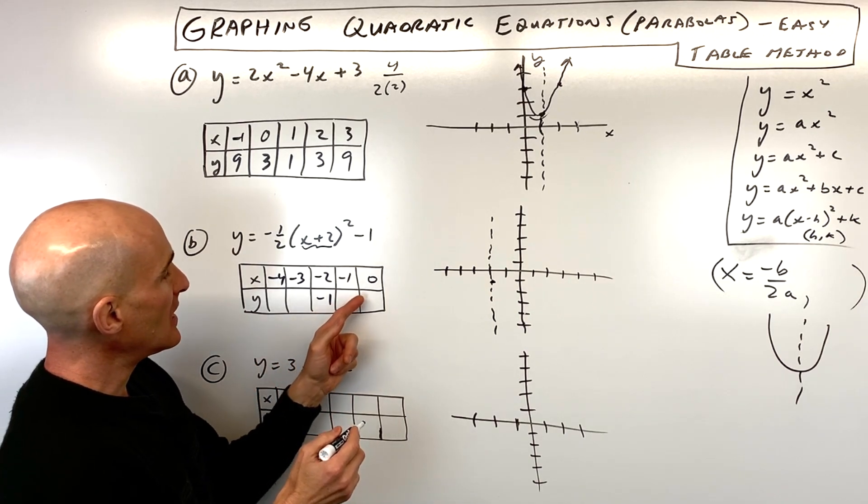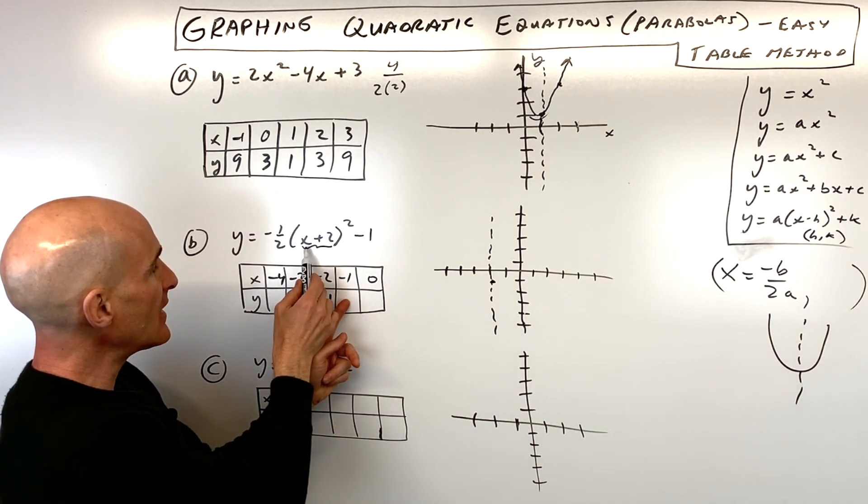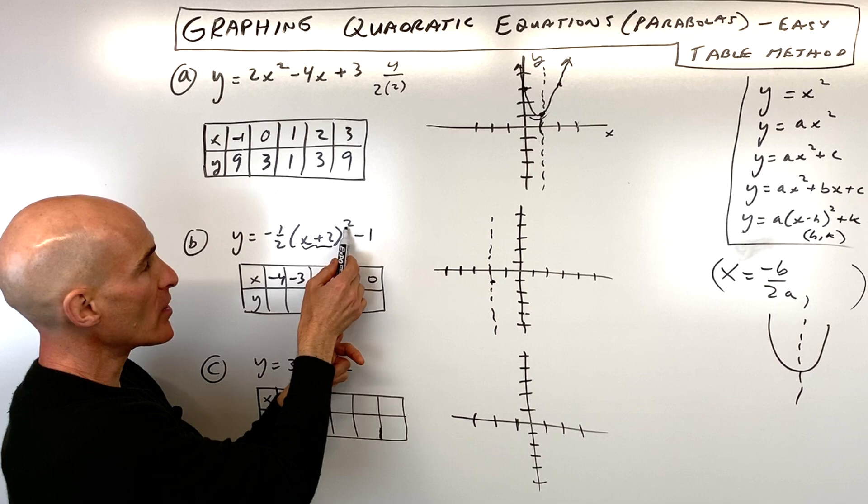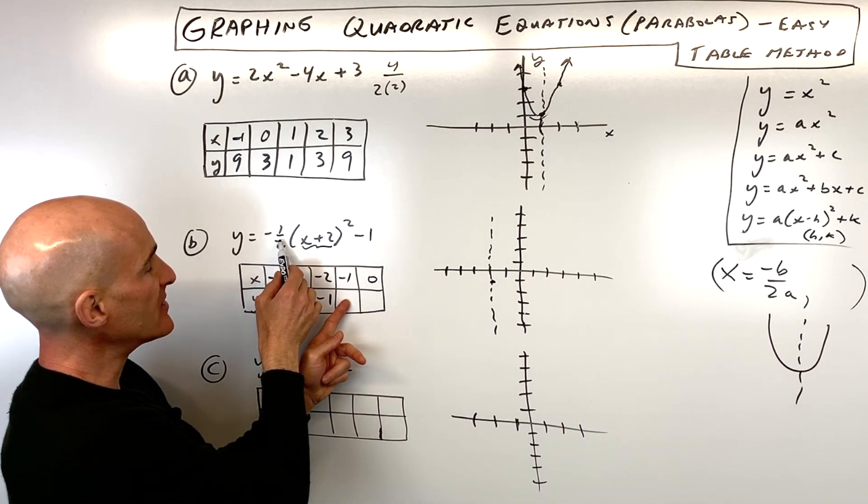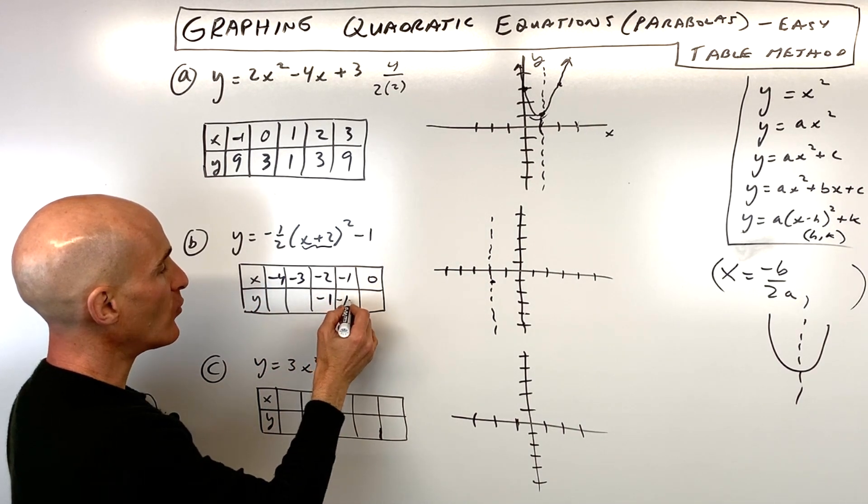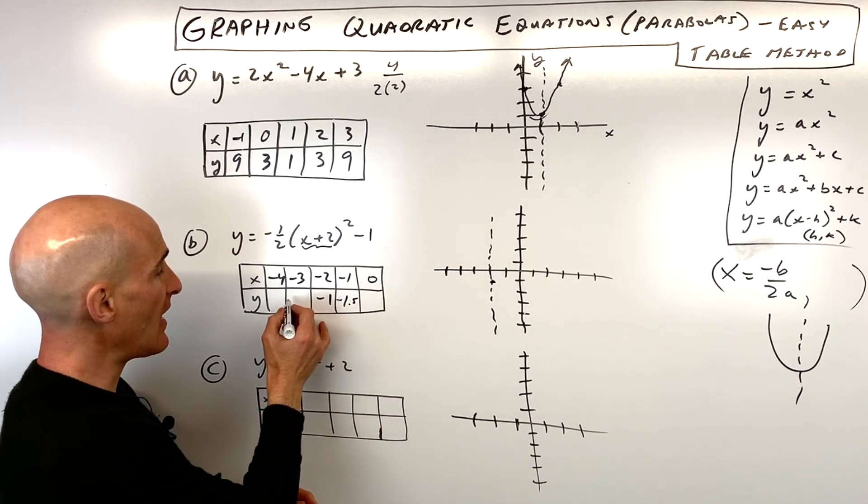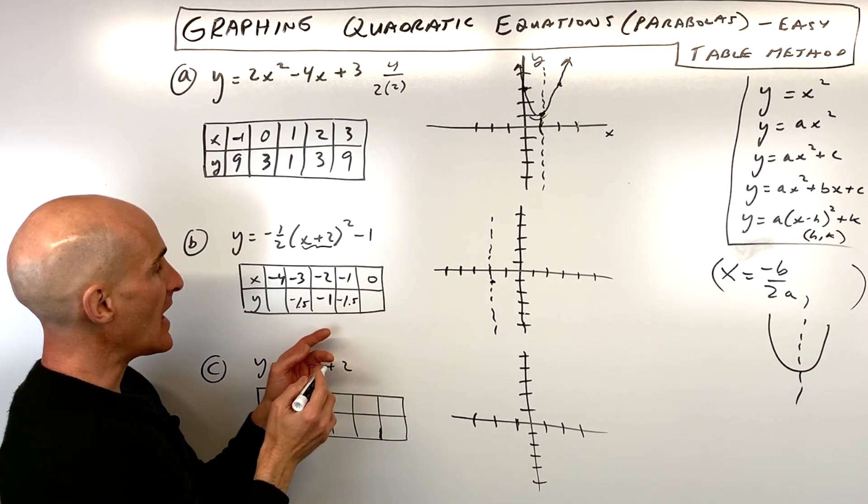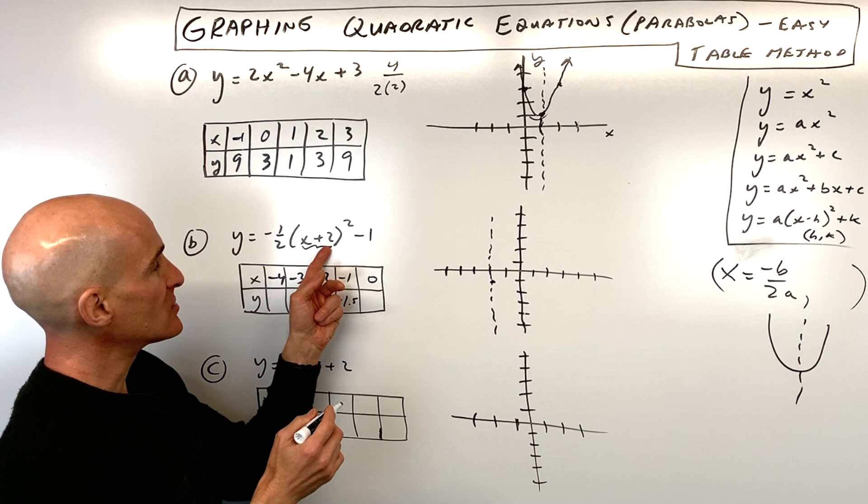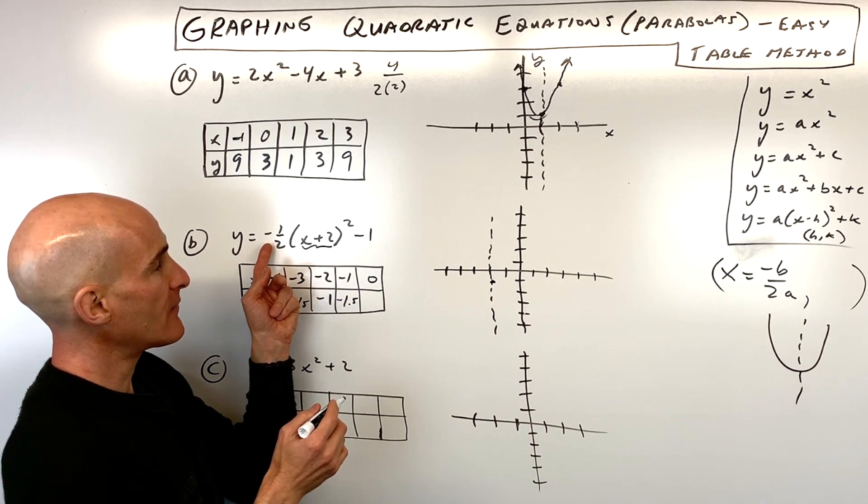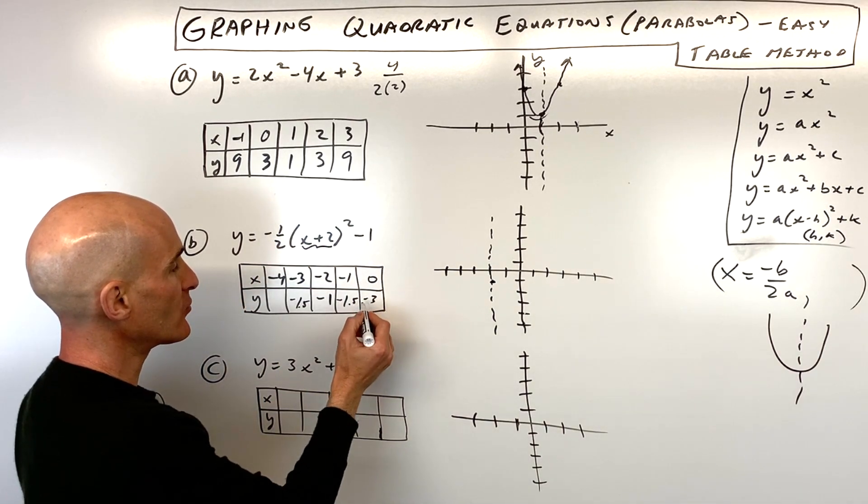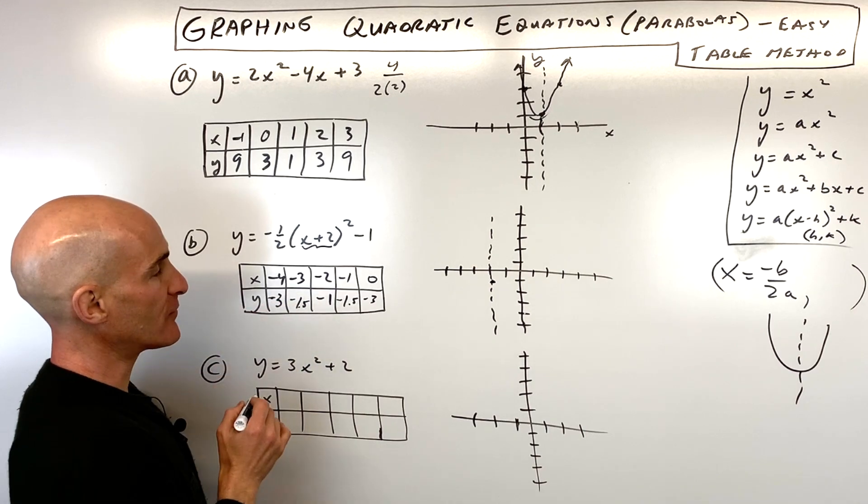Let's go ahead and put in negative 1. Negative 1 plus 2 is 1. 1 squared is 1. Times negative one-half is negative one-half. Minus 1 is negative 1 and a half. Or I'll just write negative 1.5. It's going to be the same on the other side. If we do 0, we get 2 squared is 4. Times negative one-half is negative 2. Minus 1 is negative 3. So this would also be negative 3.